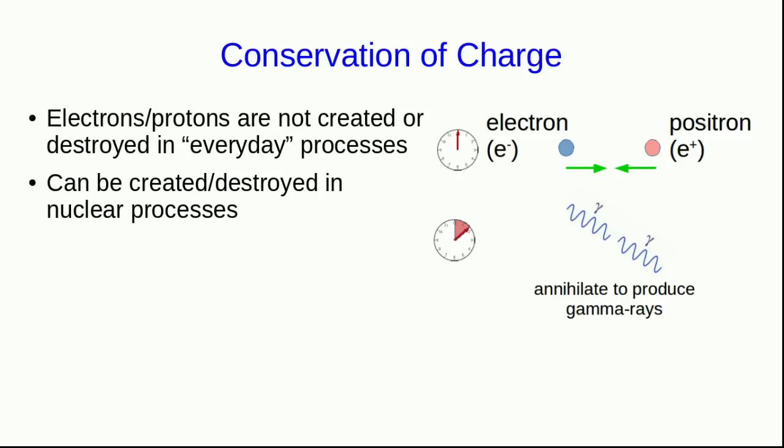When an electron meets its antiparticle opposite, the positron, they annihilate to produce gamma rays. But think of the system as the electron and positron, and after the collision as those gamma rays. Then the charge of the system before the annihilation is plus one fundamental charge unit on the positron and minus one charge unit on the electron, and so it adds up to zero. And the gamma rays are uncharged, and so the charge of the system is zero both before and after the process. Charge has been conserved.